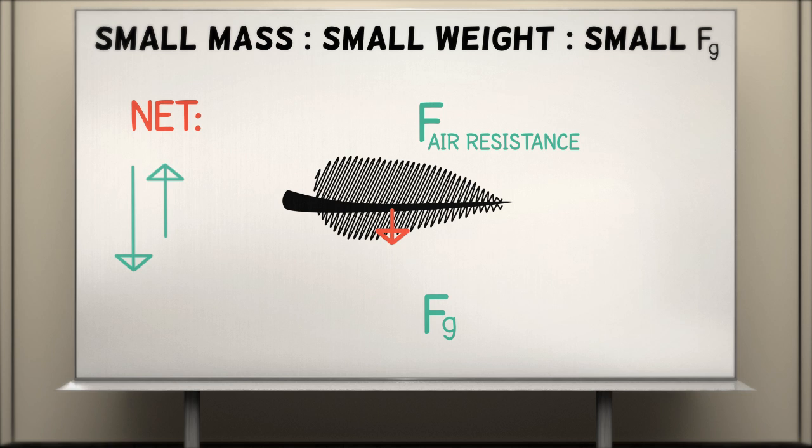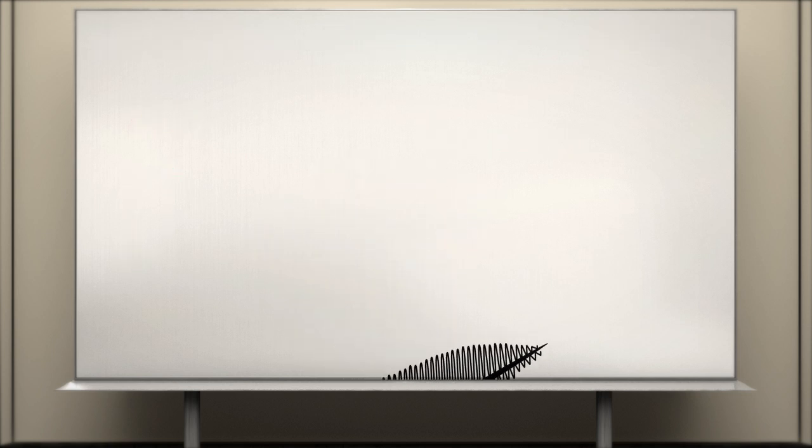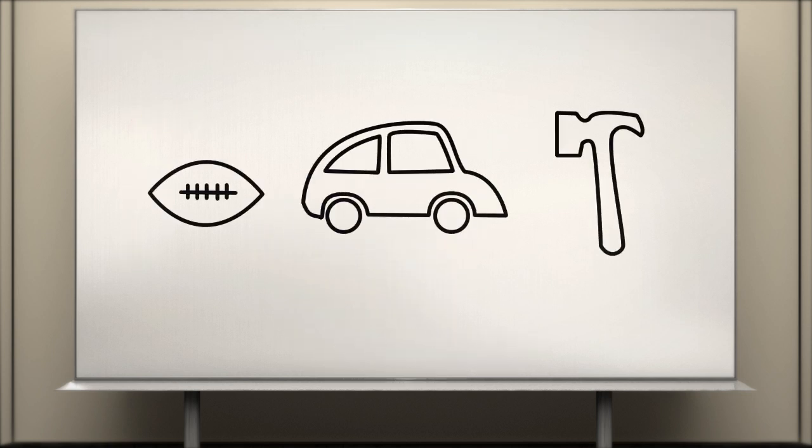For a hammer and a feather, the force of air resistance is nearly equal. But since a hammer has such a larger mass, the hammer barely notices this small force of air resistance. For most calculations in high school physics, we deal with objects that are large and fairly heavy, so you can usually ignore air resistance. But for a feather, it makes all the difference.